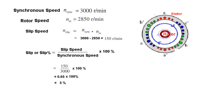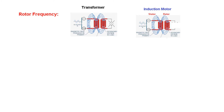Now there is a new term called rotor frequency. To understand this, we compare it with the transformer. We know that the induction motor follows the transformer principle — in a transformer we have a primary and a secondary; in an induction motor we have a stator and a rotor, and they are magnetically coupled. In a transformer, the frequency on the primary side is the same as on the secondary side, but in an induction motor, the stator frequency and the rotor frequency are not necessarily equal.